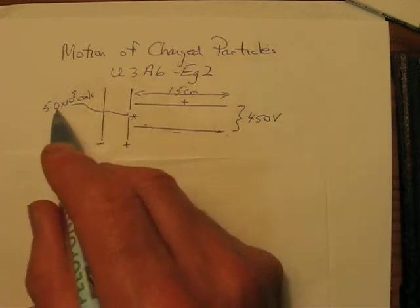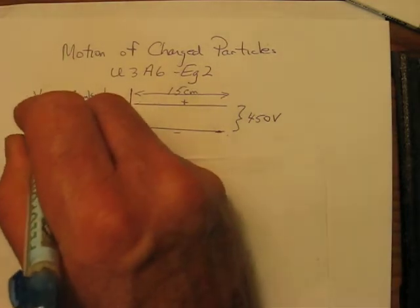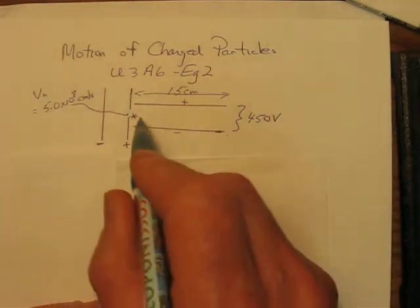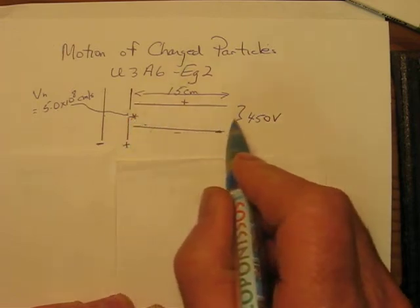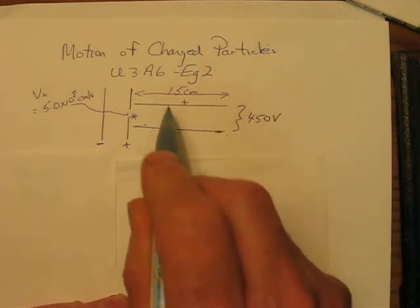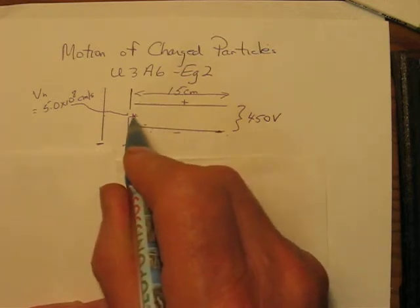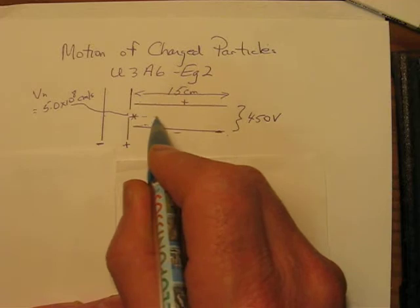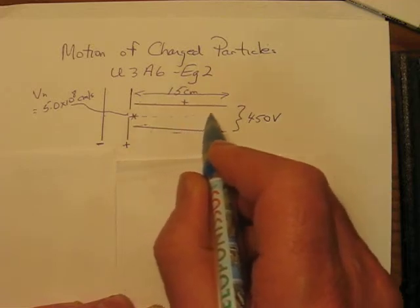This horizontal velocity, and that's what that is, the original horizontal velocity, will remain constant as it moves across the plates. However, because there now is a vertical velocity upward, the actual electron will trace a parabolic path or an arc.